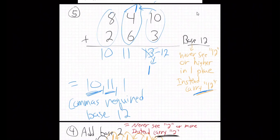So you have to have the commas to let you know what the different places are, because sometimes you'll have a two-digit number in just one place, like 10 or 11. That's why you must have commas to make the place values clear in base 12. And so there we go.